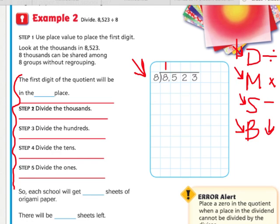So then I move to multiplying. 1 times 8 is 8. Then I subtract. 8 minus 8 is 0. Then I bring down. Now I have a 5 down here.